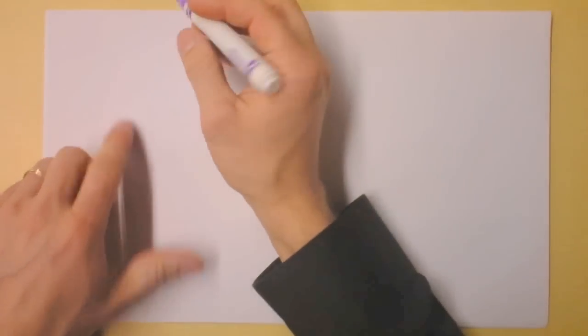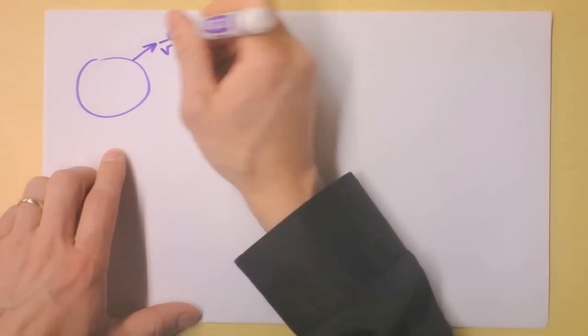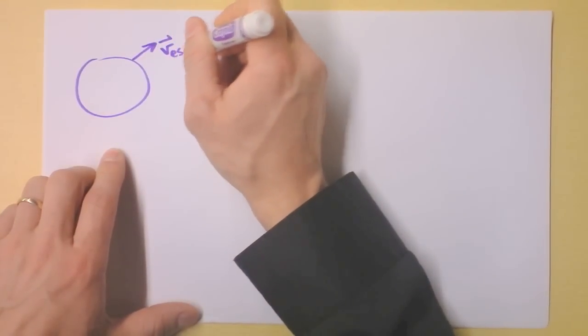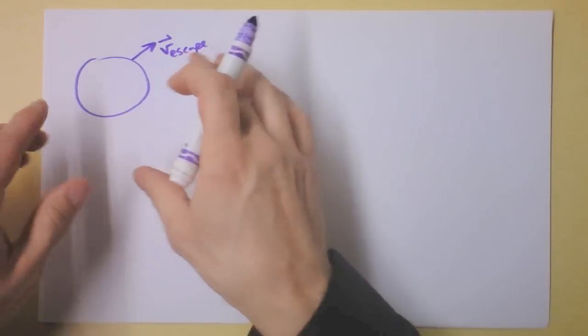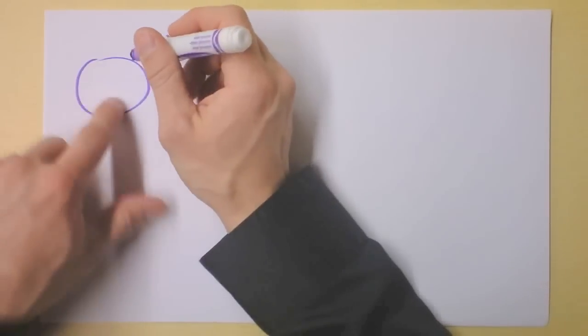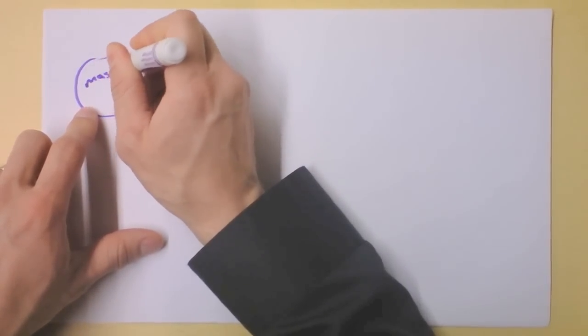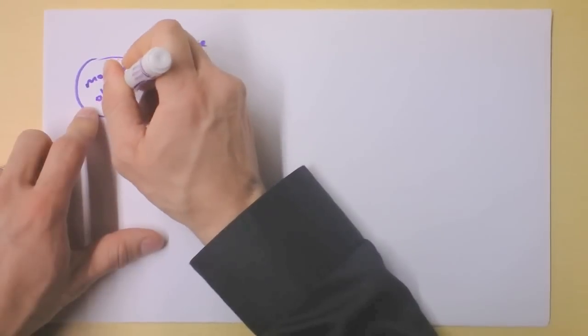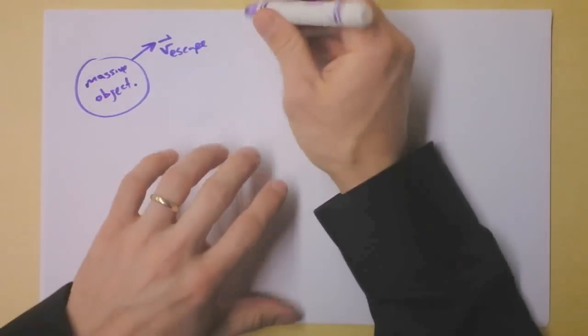A while ago we were looking at energy conservation equations and we found that in order to get away from a planet you had to have a certain velocity. If you have the escape velocity then you have sufficient kinetic energy to escape the gravitational potential energy of this massive object, and if you can escape that massive object we define that velocity as escape velocity.